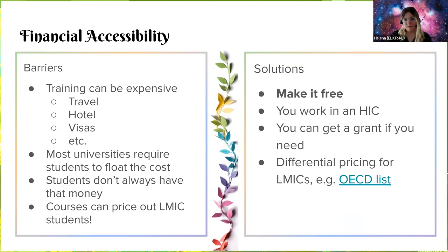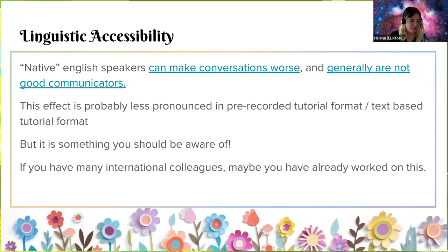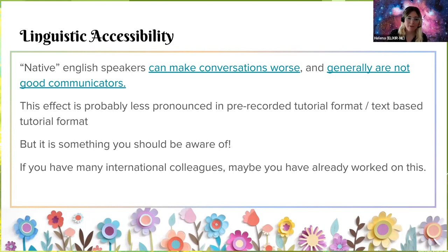The solutions are: make it free. All of us work in high-income countries and can get grants. We can provide differential pricing to people in low and middle-income countries. There's a nice list where you can say, hey, are you from this country? Great, you get a discount with registration. We've been doing our best to implement this in all of our training events. Speaking of people from outside English-speaking countries, native English speakers have a negative effect on conversations a lot of the time — there is data to back this up. When native English speakers enter a conversation, this can be a negative because a lot of us are not good communicators in English and we use a lot of idioms and metaphors.